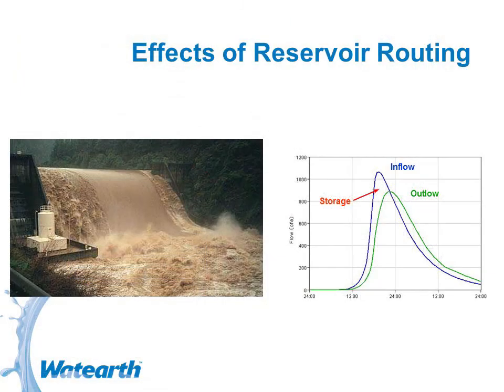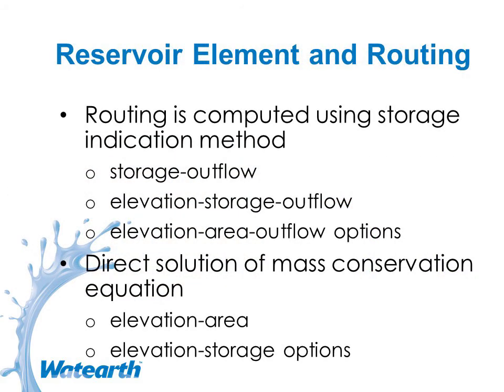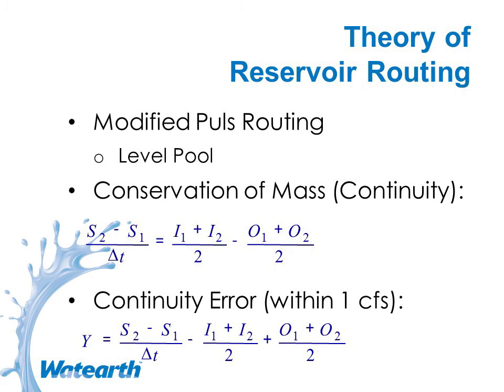With reservoir routing, you've got your inflow hydrograph in blue — it gets routed, the peak gets dampened, it gets squished a little bit and shifted in time. The reservoir routing uses the modified pulse routing method, which we talked about for streamflow, and also uses conservation of mass or the continuity equation.